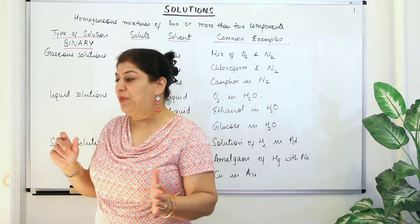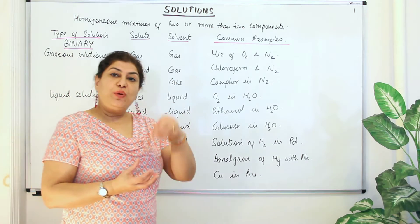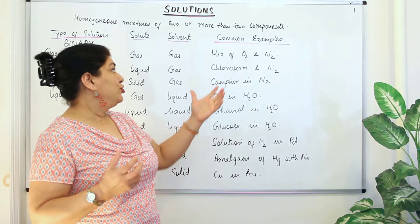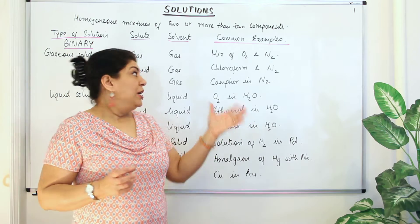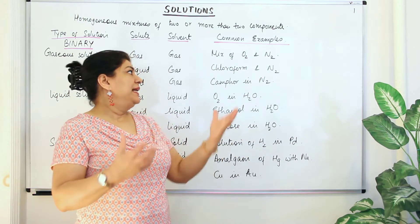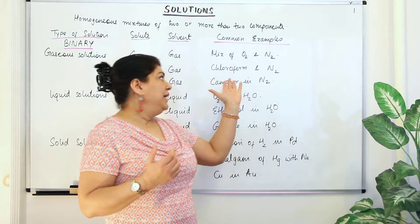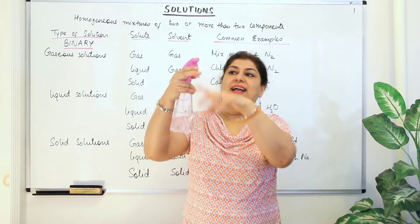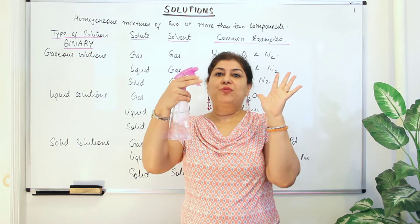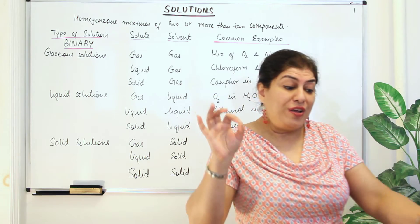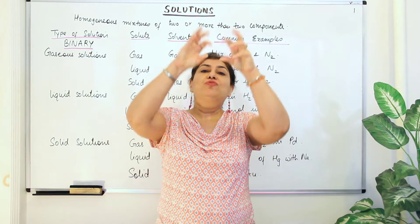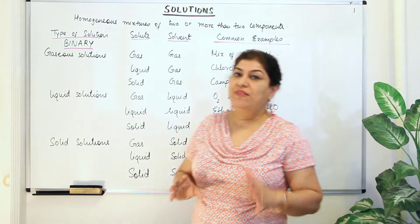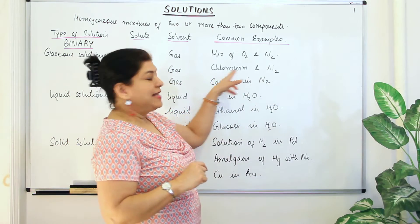The second type of gaseous solution is liquid in gas — where a liquid is dispersed evenly in a gaseous solvent. An example is chloroform present in nitrogen. When fog or mist forms, tiny water droplets are dispersed in the atmosphere — that is also an example of a liquid-in-gas mixture.